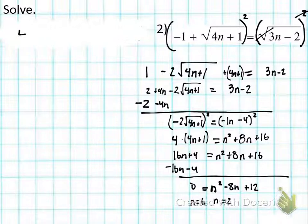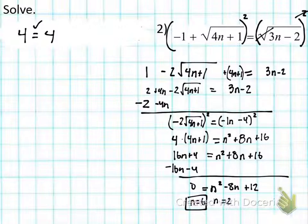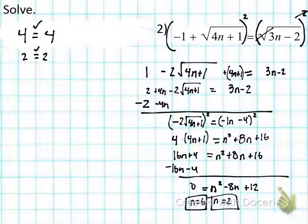Let's check n = 6. Left side: √(4×6 + 1) − 1 = √25 − 1 = 5 − 1 = 4. Right side: √(3×6 − 2) = √16 = 4. Four equals four — valid solution. Now n = 2. Left side: √(4×2 + 1) − 1 = √9 − 1 = 3 − 1 = 2. Right side: √(3×2 − 2) = √4 = 2. Two equals two — also valid. Both n = 6 and n = 2 are valid solutions.